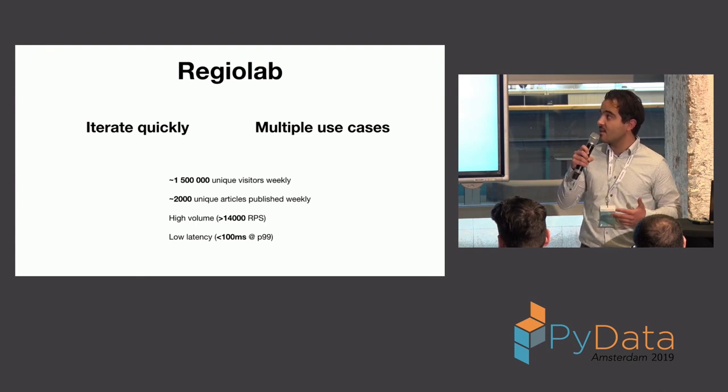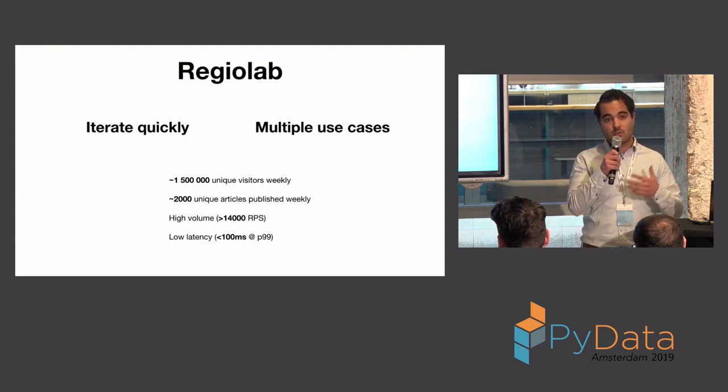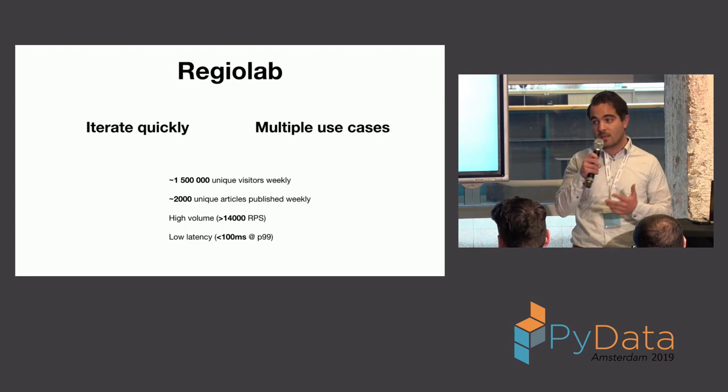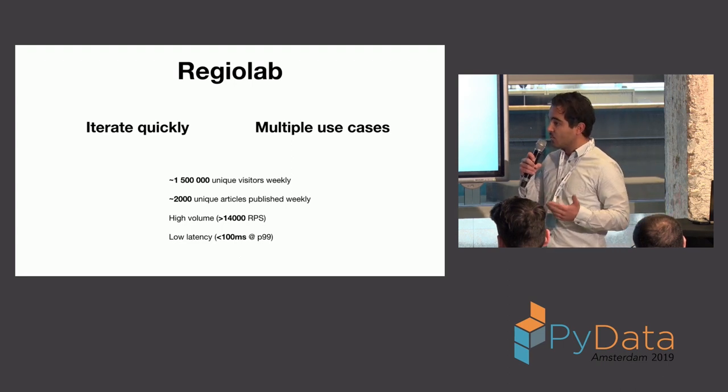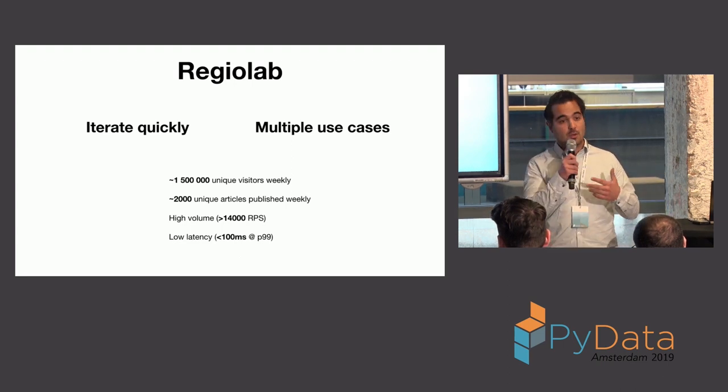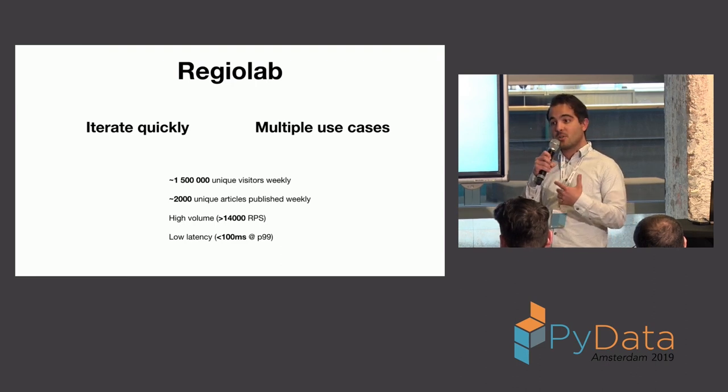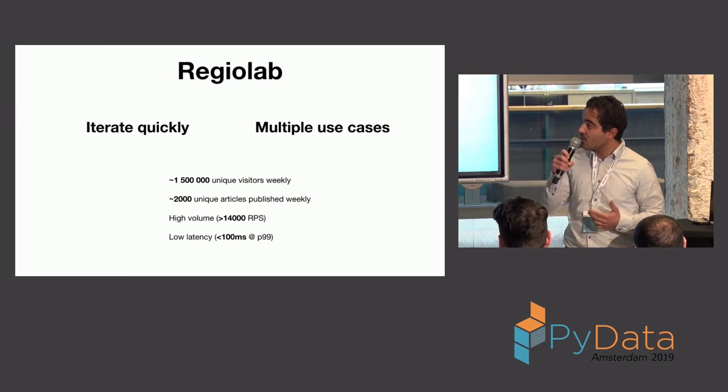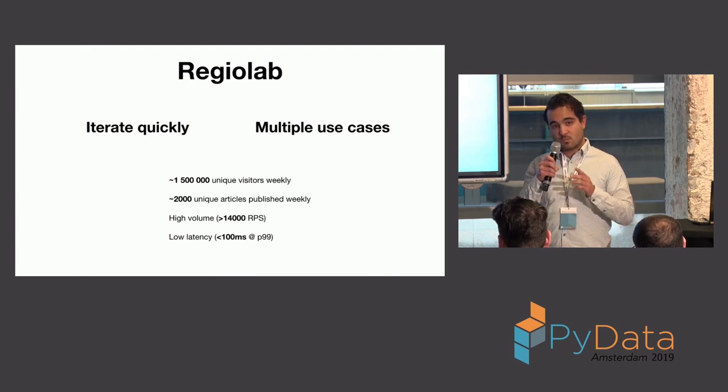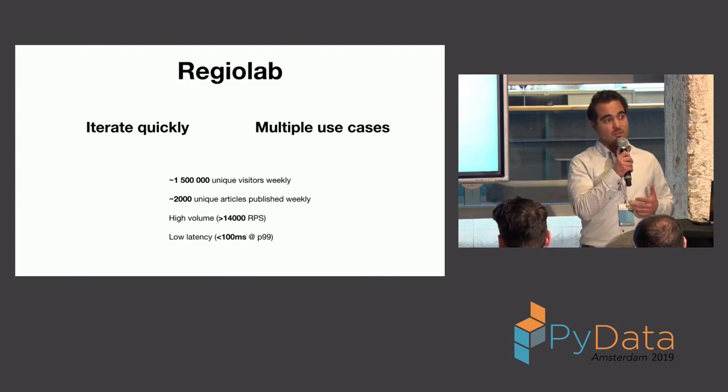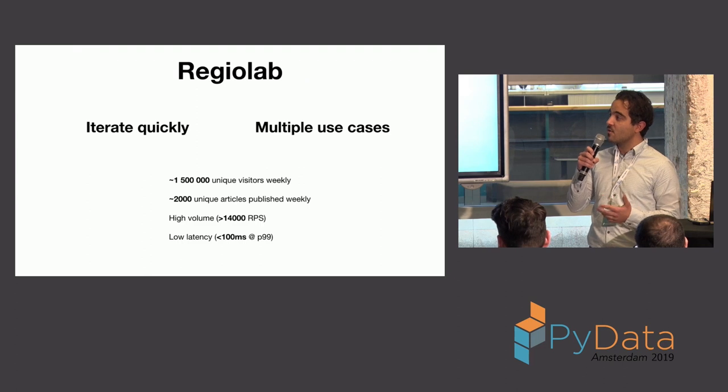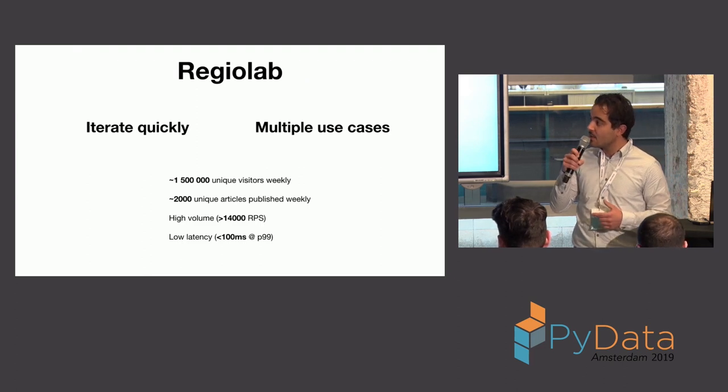Now, the other thing is that there were multiple use cases. So, we're talking recommendations right now. We're talking about different titles. So, if you come onto the page, you might see the same articles as someone else, but you might get different titles. So, these two aspects of the question sort of drove our efforts into engineering the solution.